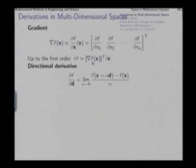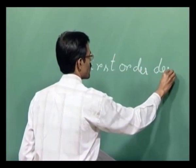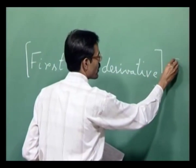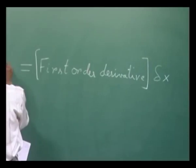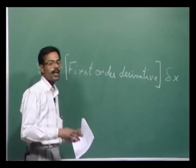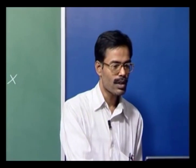The first order differential change in the function value is the product of the gradient and the first order change in the value of x. This will be considered as the notion of first order derivative: the first order derivative is something which, multiplied with a differential change in the independent variable, produces the corresponding differential change in the function or the dependent variable. In this sense, the gradient vector forms the first order derivative of a scalar function of a vector variable.